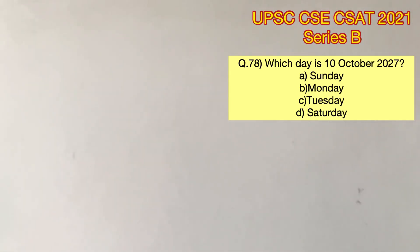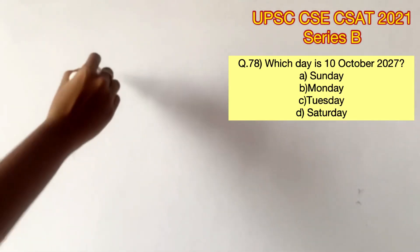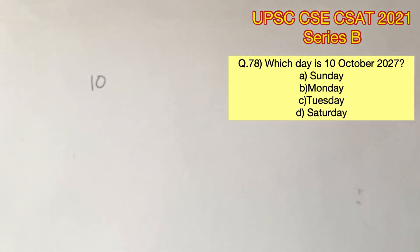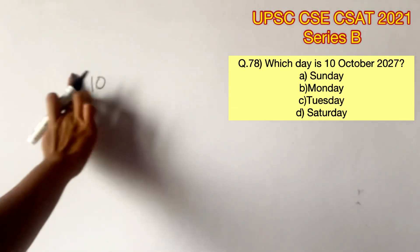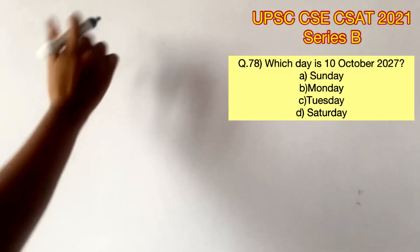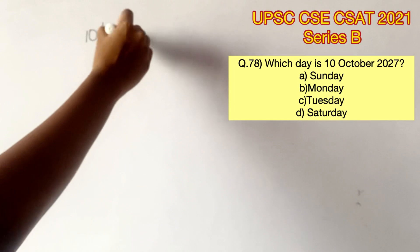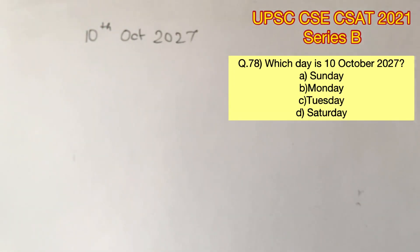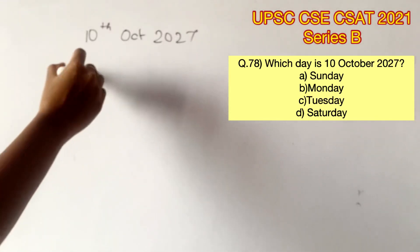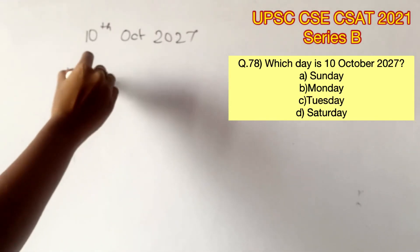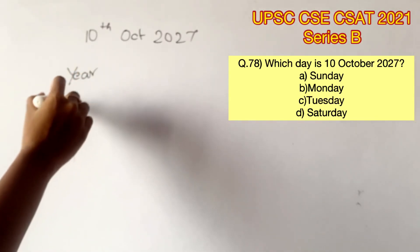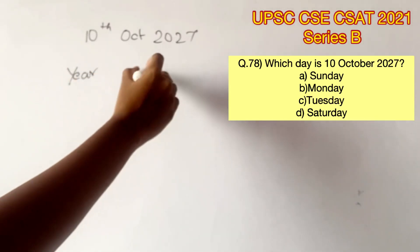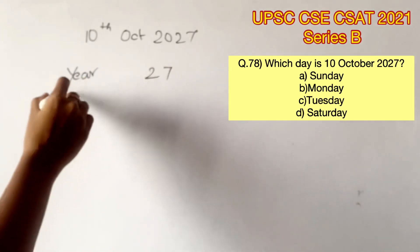Welcome to Aptitude Destination. Please pause the video and read the question completely. Which day is 10th October 2027? We will be solving this using the code method. I have taken a separate video explaining how this code method works, so if you don't know this method, please do watch that video. You can find it through the link in the description box below.